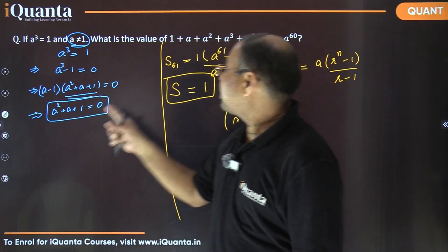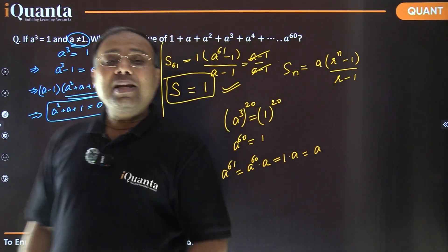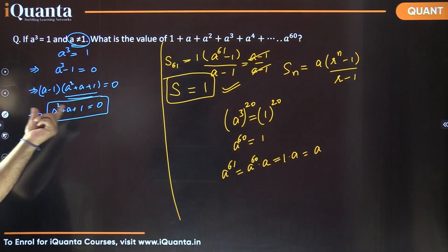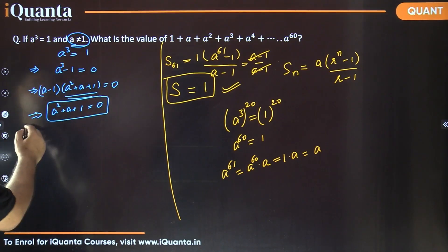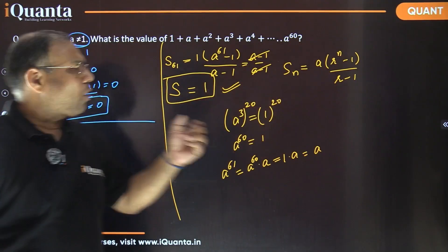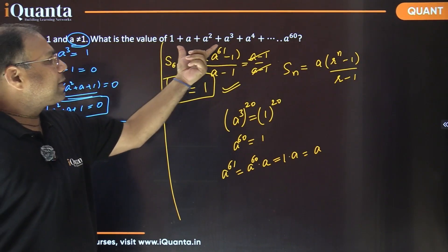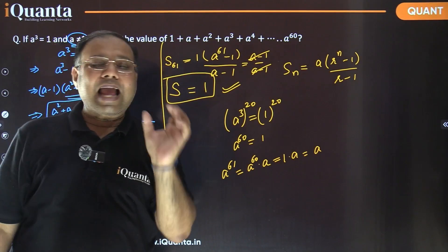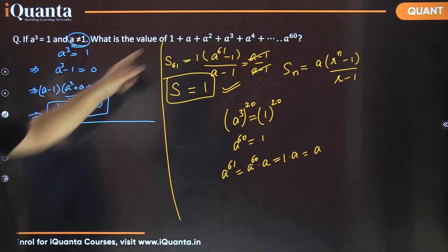Now, using this property in the expression 1 + a + a² + ... + a⁶⁰, we group three consecutive terms together. Keeping the first term 1 aside, we then group: (a + a² + a³), (a⁴ + a⁵ + a⁶), and so on, up to (a⁵⁸ + a⁵⁹ + a⁶⁰). That gives 20 groups of three terms each.